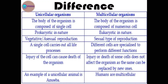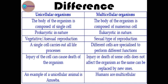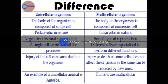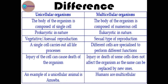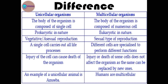Now let's look at the differences between unicellular and multicellular organisms. The body of a unicellular organism is composed of a single cell, while the body of a multicellular organism is composed of numerous cells. Unicellular organisms are prokaryotic in nature; multicellular organisms are eukaryotic. In unicellular organisms, asexual reproduction occurs; in multicellular organisms, sexual reproduction occurs. A single cell in unicellular organisms carries out all life processes, whereas in multicellular organisms different cells are specialized to perform different functions. An injury to the cell can cause death of a unicellular organism, but in multicellular organisms, injury or death of some cells does not affect the organism.